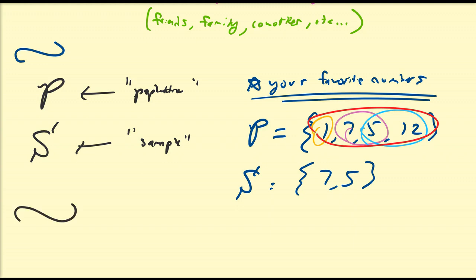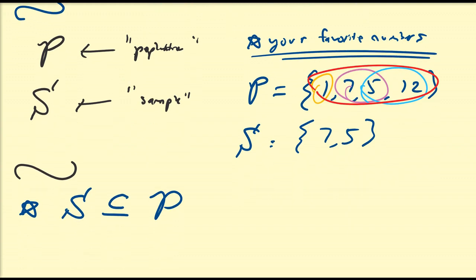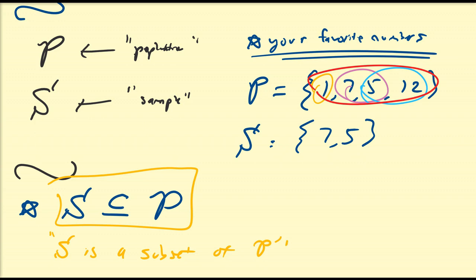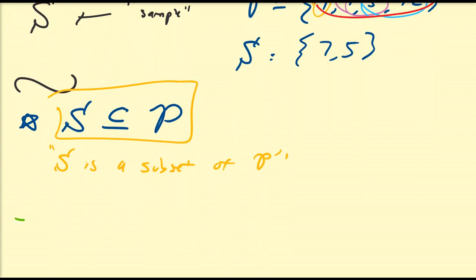What we usually write is the following statement or result, namely S is a subset of P. This is the mathematical way of writing S is a subset of P.